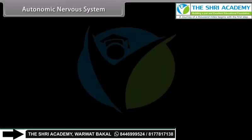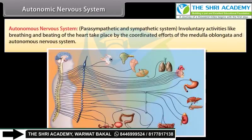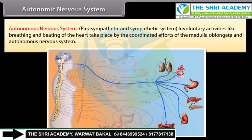The autonomic nervous system includes the parasympathetic and sympathetic systems. Involuntary activities like breathing and the beating of the heart take place by the coordinated efforts of the medulla oblongata and the autonomic nervous system.